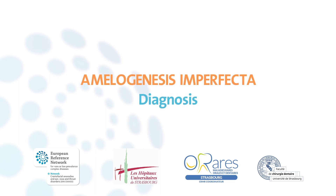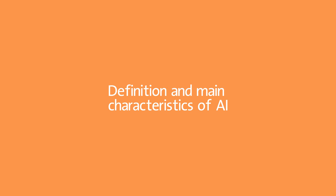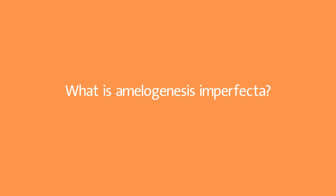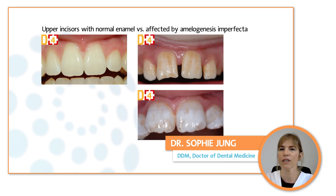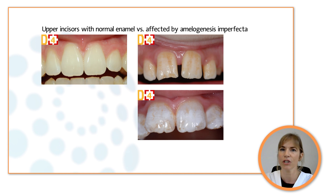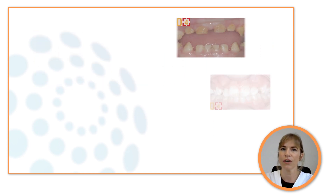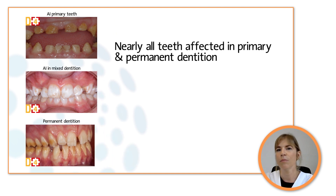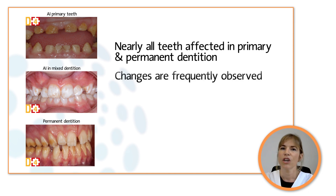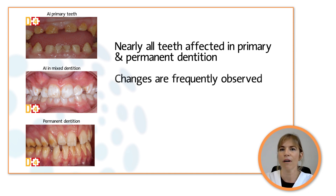The aim of this video is to explain the characteristics of Amelogenesis Imperfecta. Amelogenesis Imperfecta represents a group of rare genetic conditions characterized by defective enamel formation and mineralization. The structure and clinical appearance of all or nearly all teeth are affected in both primary and permanent dentitions. Changes of other intraoral and extraoral tissues can also be frequently observed.